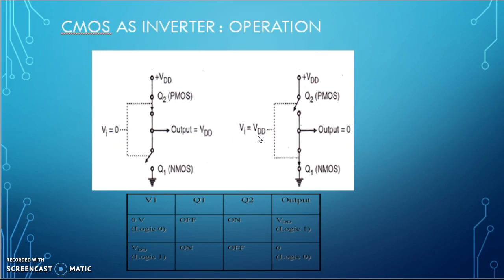When input is VDD that is logic 1, PMOS will work as open circuit and NMOS will work as short circuit. As we see in the diagram, the ground terminal is connected to the output so the output is 0.